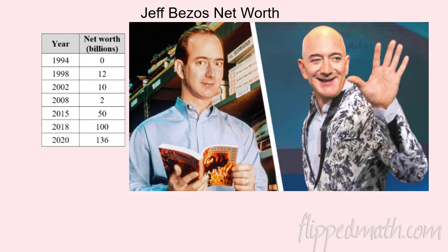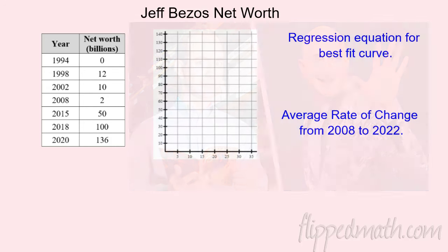All right, here we go. Let's take a look at the last section of the chapter. We're going to rock and roll with some more applications, looking at different models. We're going to start with Jeff Bezos — young Jeff Bezos and current Jeff Bezos — and we're looking at his net worth in billions of dollars. Let's go ahead and graph his net worth over time and see if we can find a model that fits the data.